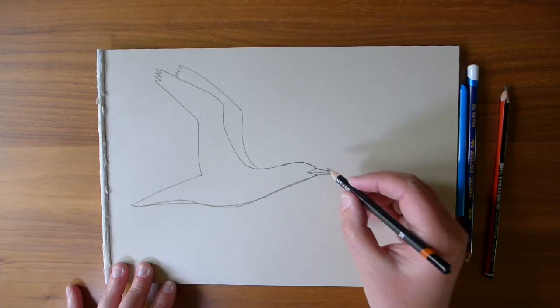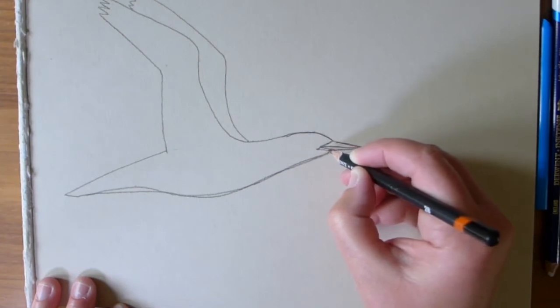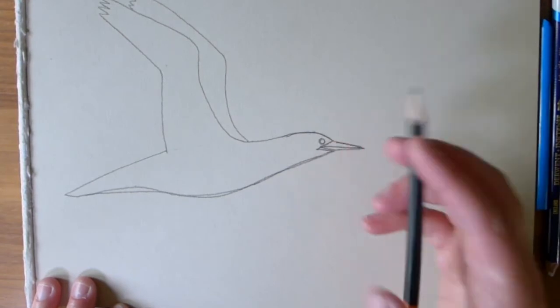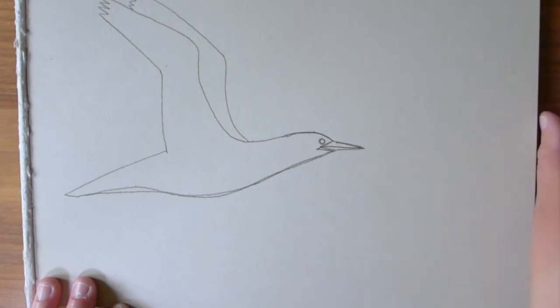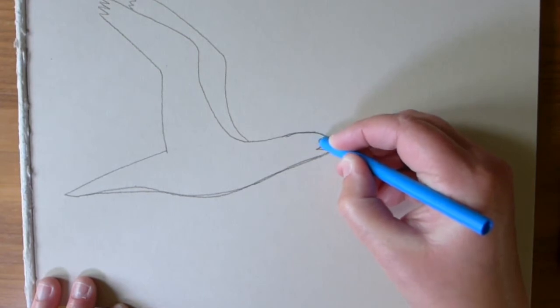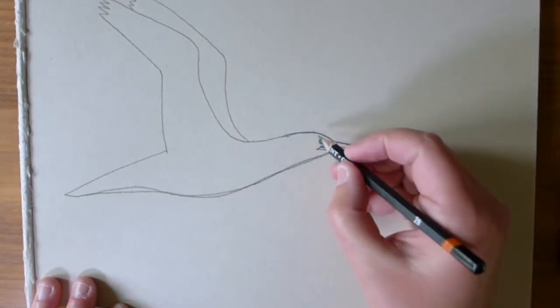I think our gannet needs an eye now but we'll just tidy up the top of the beak here they've got really dark line at the back of the beak and you'll remember that our gannet has a bright blue eye so you need to grab your blue crayon you can pause the video just here if you like so you can catch up and put in a bright blue eye.